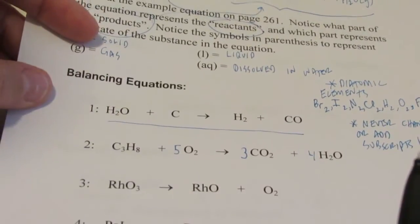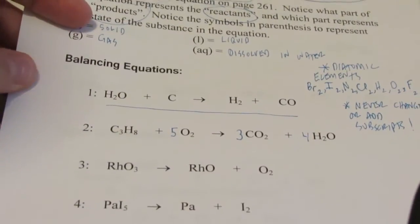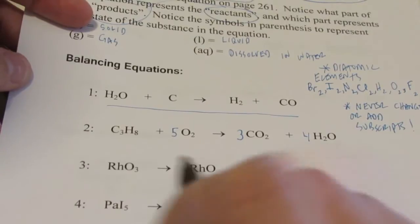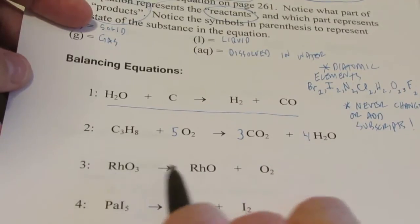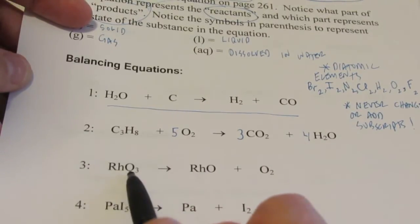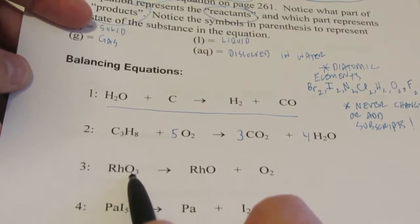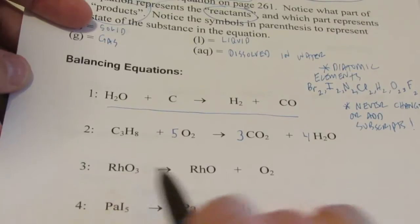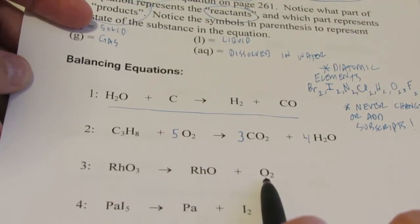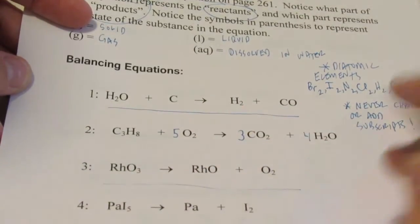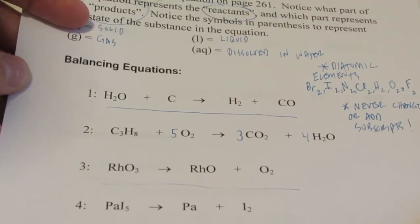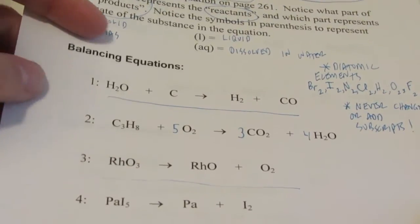Take a look at number three. There's one rhodium on both sides, three oxygens on the reactant side, and one plus two more gives three on the product side. That equation is already balanced.